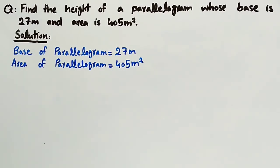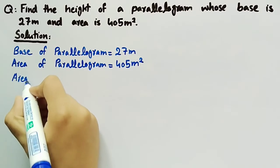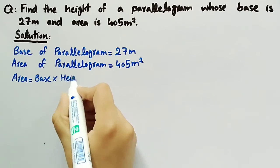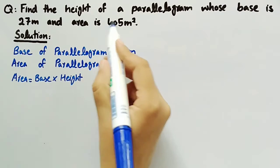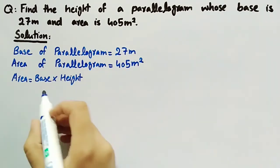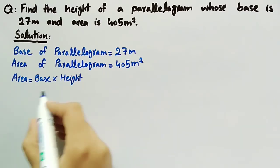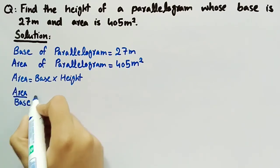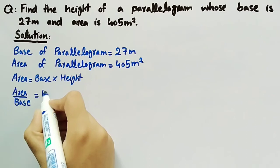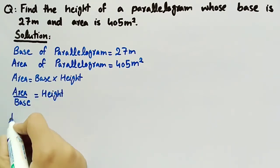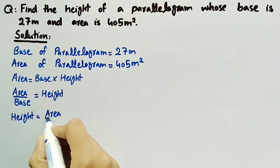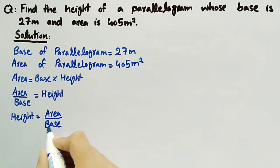We have already studied that the formula to find area of a parallelogram is: area equal to base multiplied by height. But here in this question, we have to find the height of a parallelogram. So we will rearrange this formula by dividing base on both sides. We get height equal to area divided by base. We can use this formula to find the height of the parallelogram.